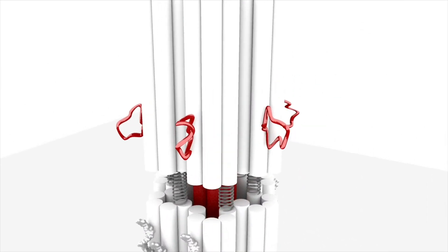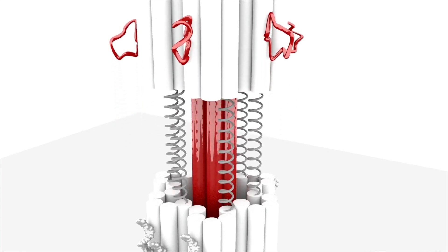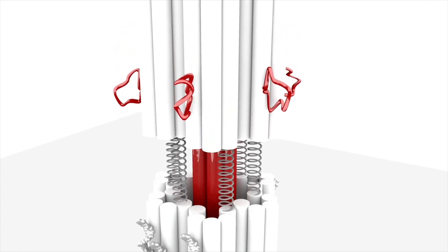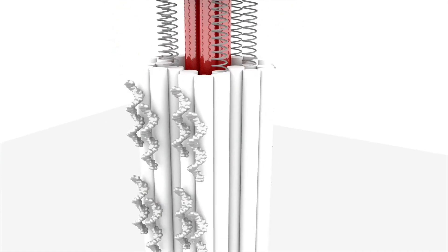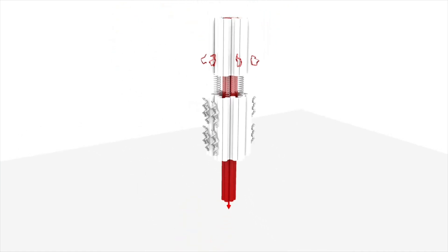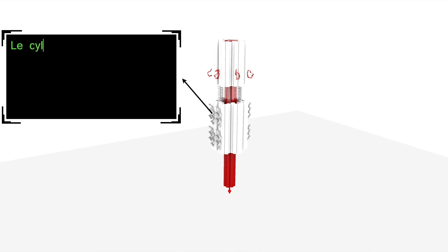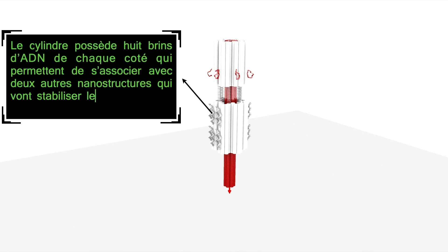The dysfunction of this cellular mechanosensitivity is involved in many diseases. For example, cancer cells migrate within the body by sensing and constantly adapting to the mechanical properties of their microenvironment. Such adaptation is only possible because specific forces are detected by mechanoreceptors that transmit the information to the cell cytoskeleton.